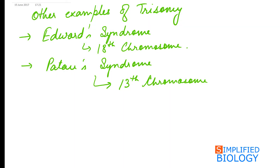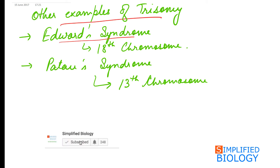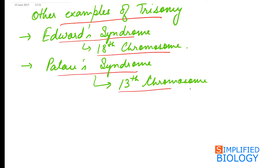Other examples of trisomy include Edwards syndrome, in which the 18th chromosome is present in triplicates, and Patau syndrome, in which the 13th chromosome is present in triplicates.